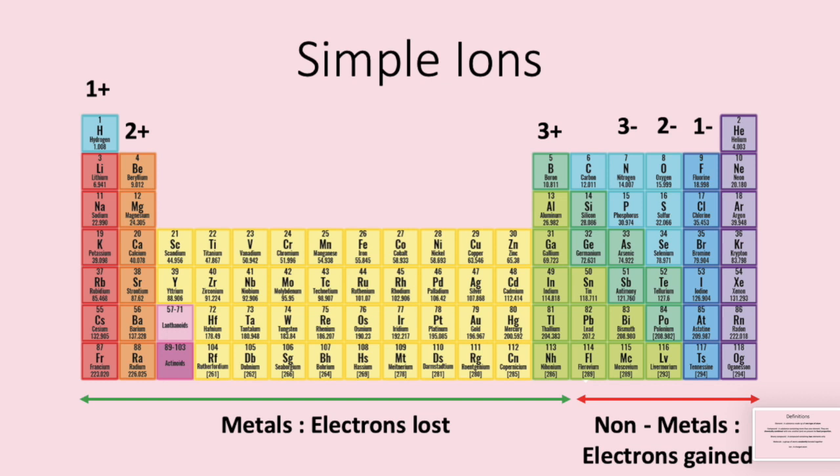Elements in group one have one electron in the outer shell. All elements like to have a full outer shell of electrons so it makes sense to lose that outer shell electron and form a one plus ion. Elements in group two of the periodic table have two electrons in the outer shell. They like to lose both of them forming a two plus charge.